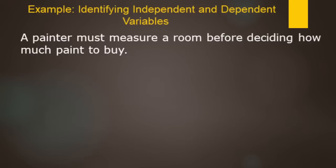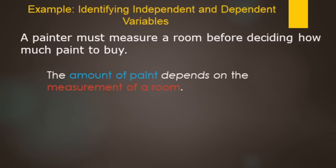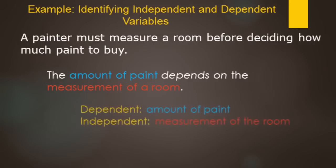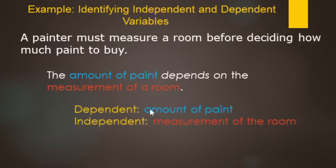Let's identify the independent and dependent variables. A painter must measure a room before deciding how much paint to buy. The amount of paint you buy depends on how big the room is — the bigger the room, the more paint. So the dependent variable is the amount of paint, normally measured in gallons, and the independent variable is the size of the room, measured in square feet or square meters.